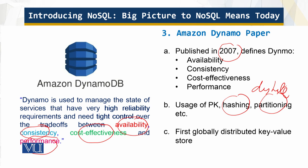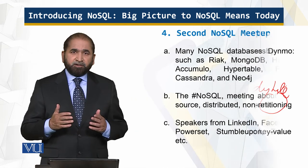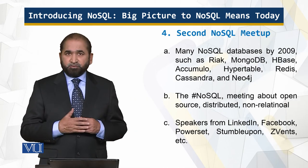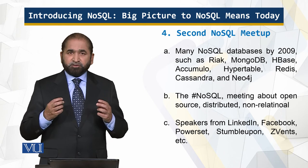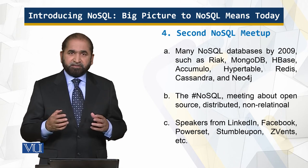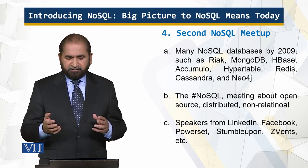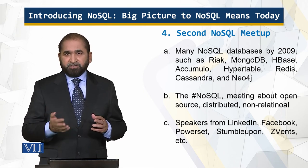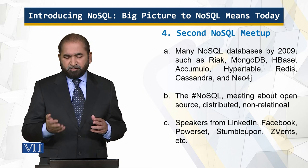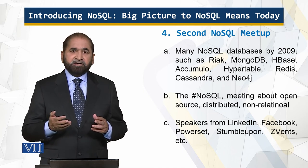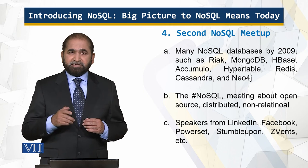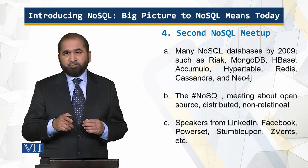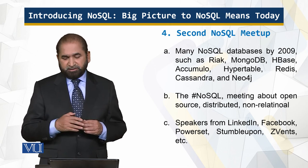The second NoSQL meetup was held in 2009. By then, people were developing solutions to meet their challenges, and there were a lot of products in the market — MongoDB, Redis, Cassandra, and the list goes on. It was at this meetup that the hashtag NoSQL was used for the first time.